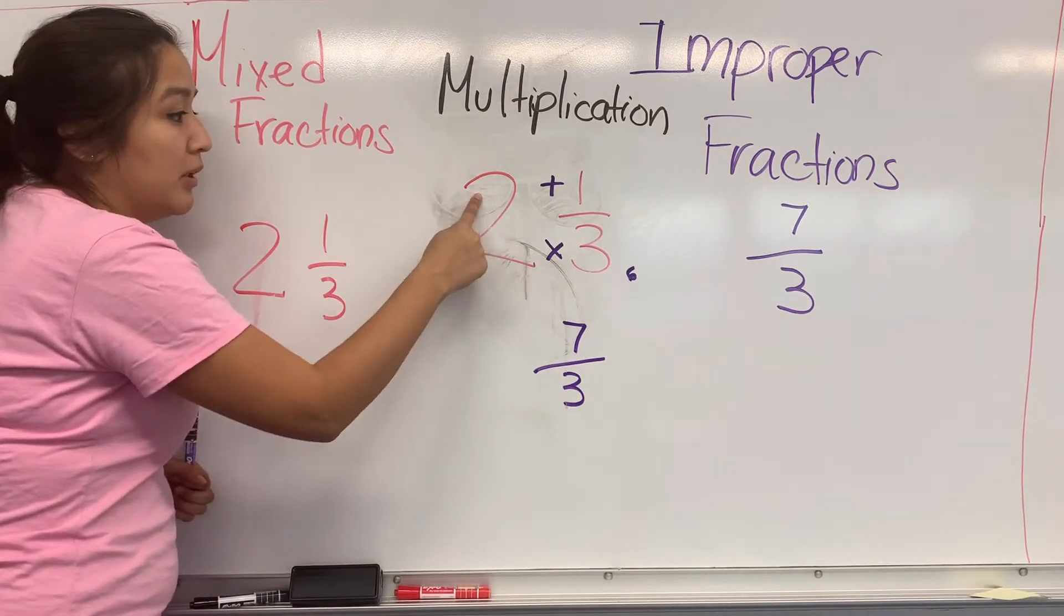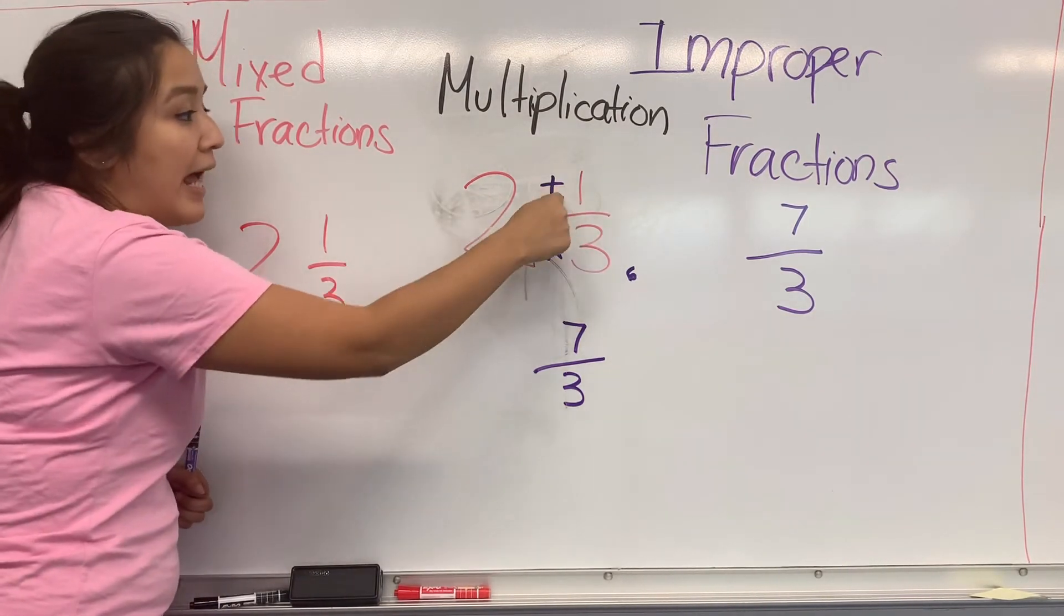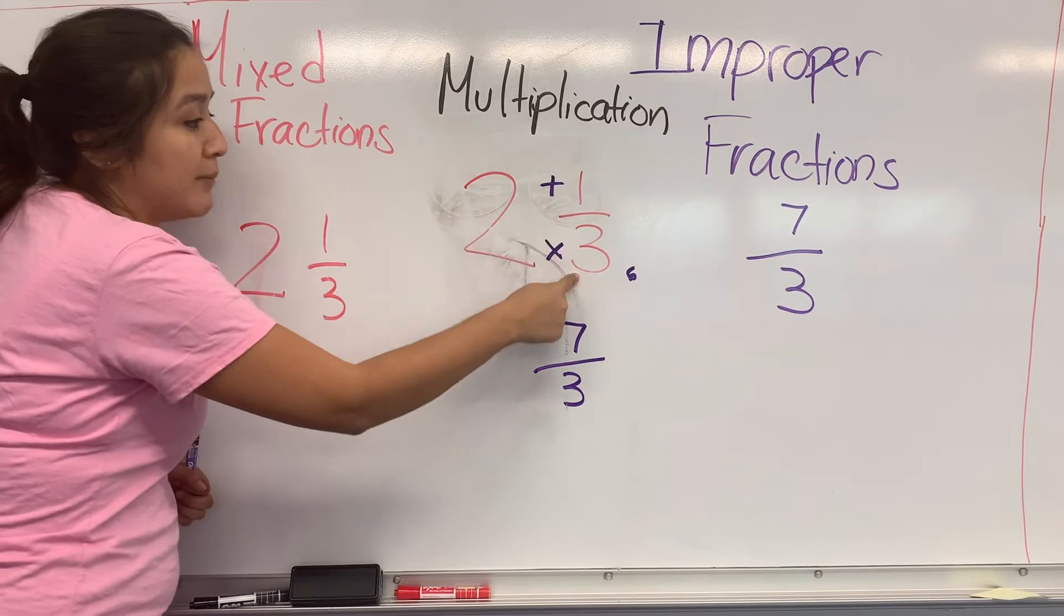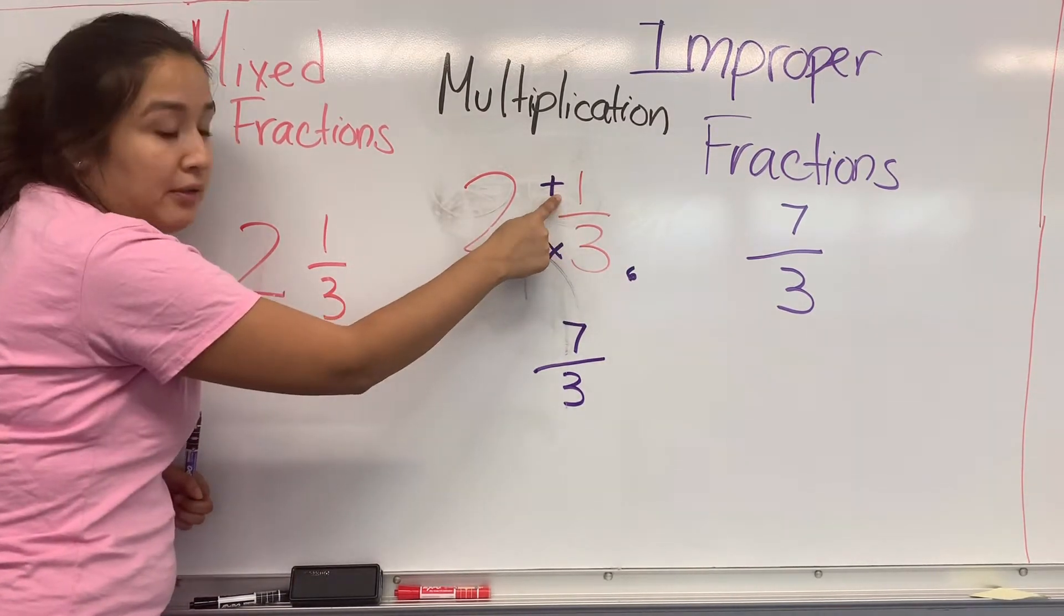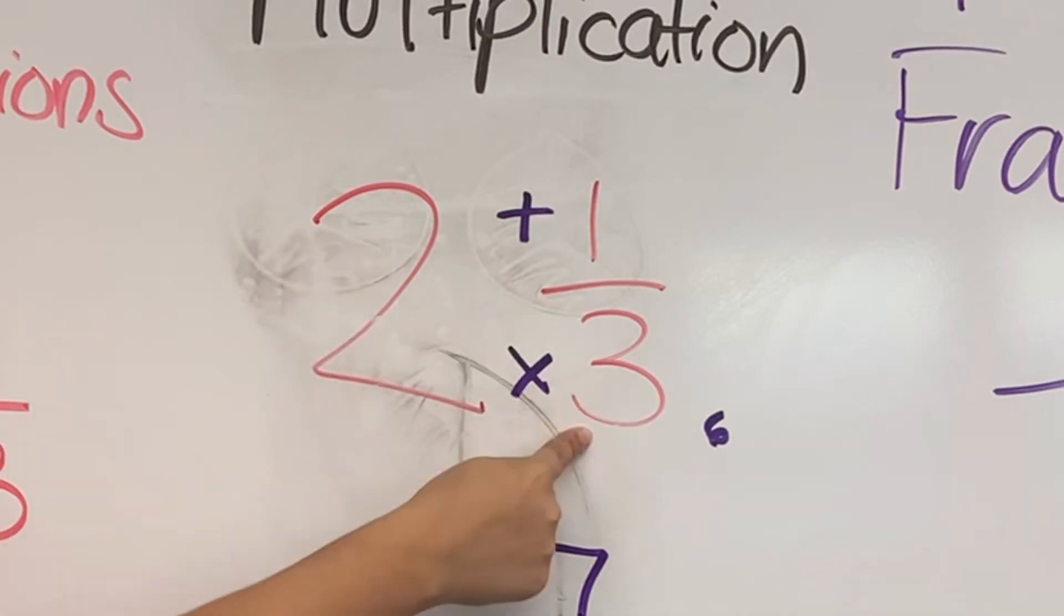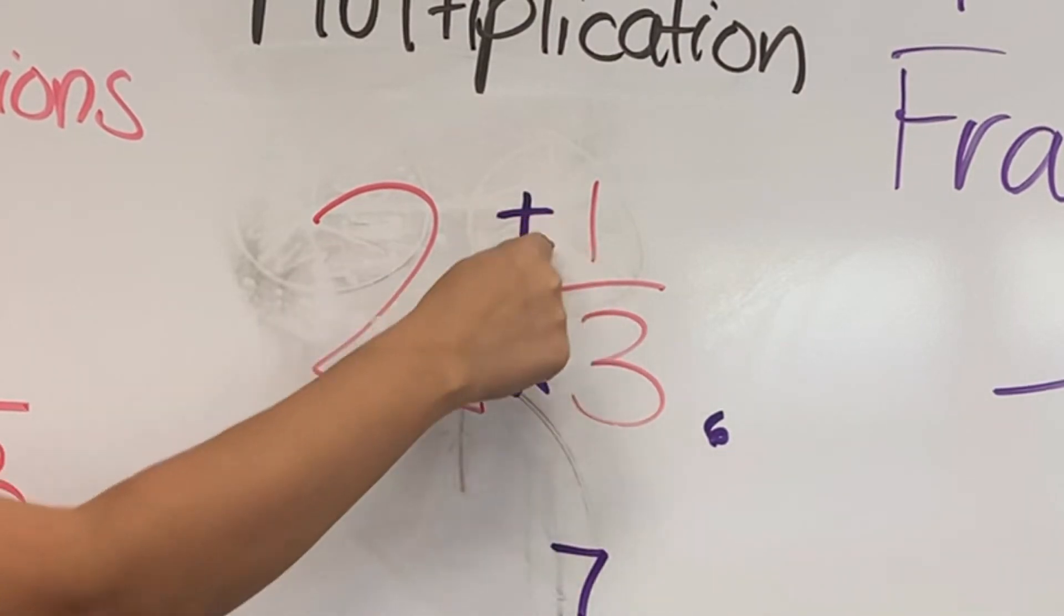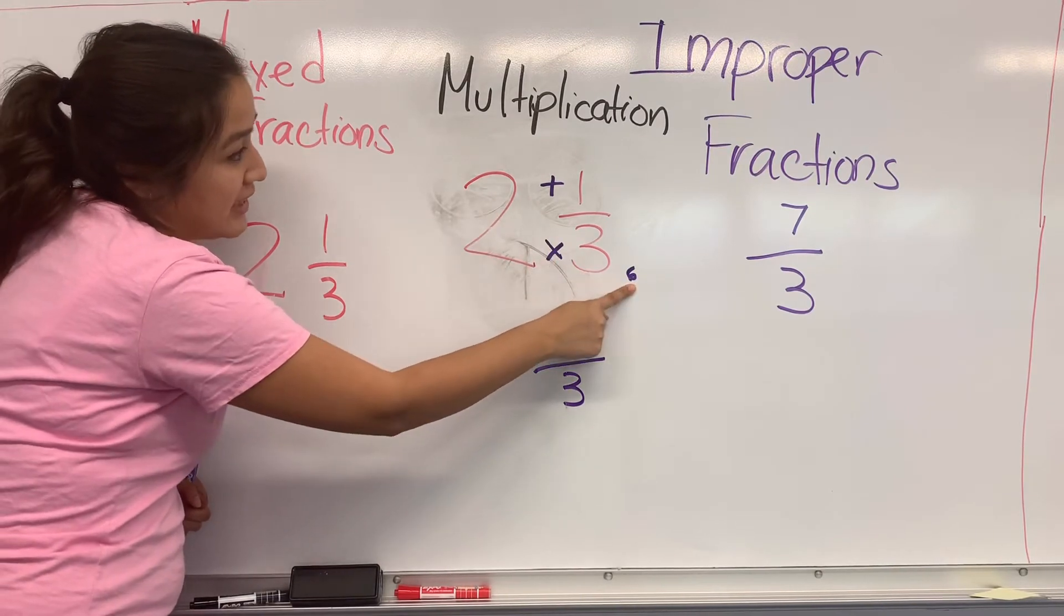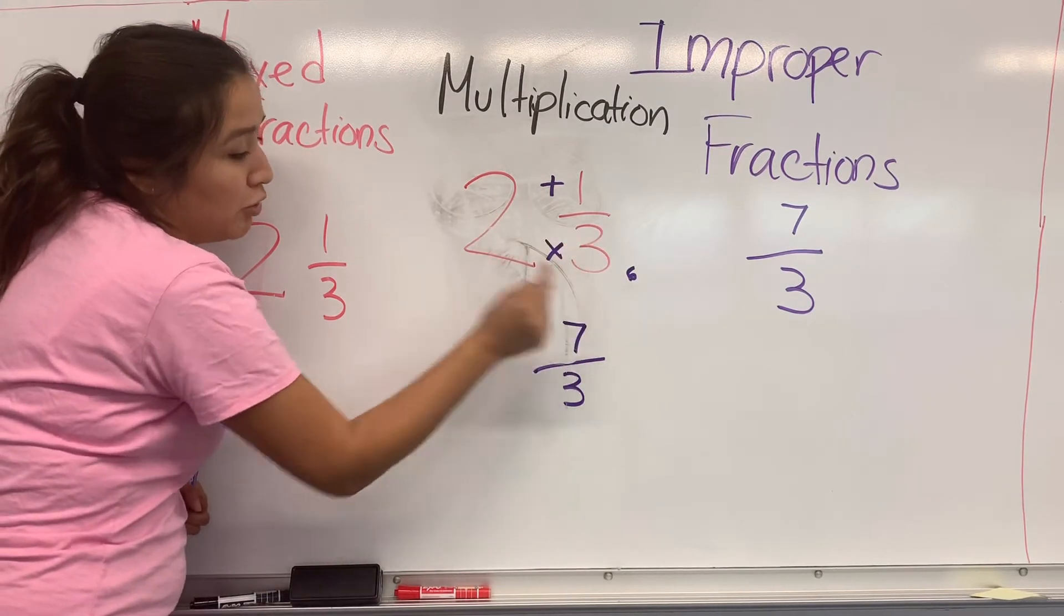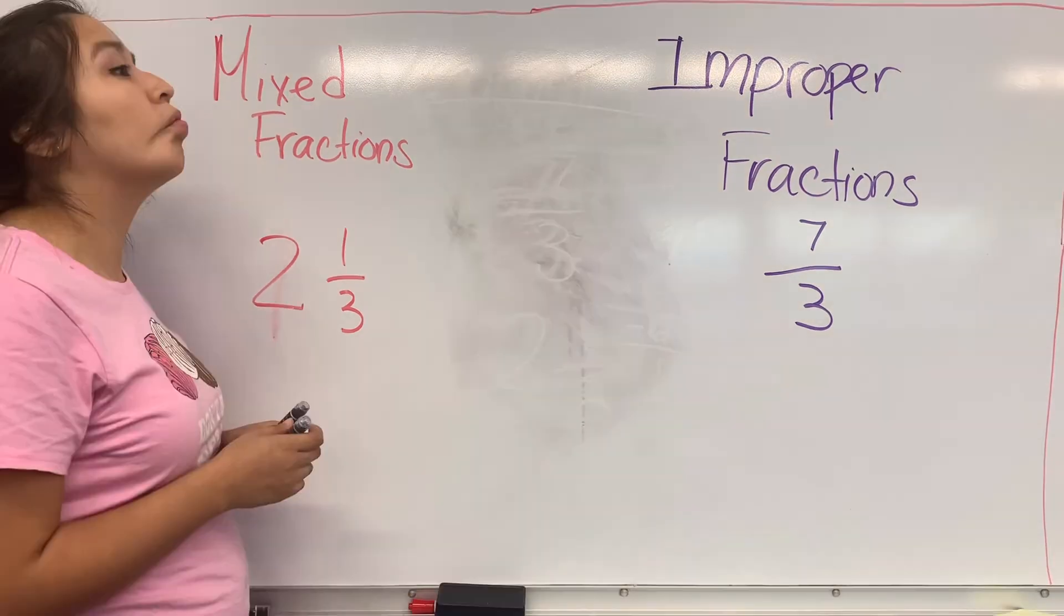That's the whole number times the denominator, add the numerator. So 2 times 3, which gave us 6, plus 1, will give us the new numerator. Action!